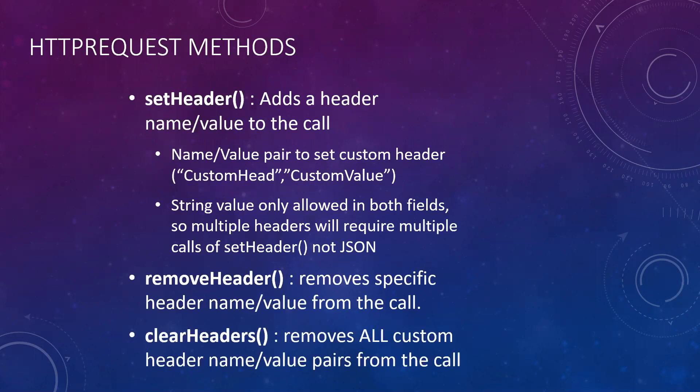Next we move on to the methods. First up is set header, which adds a custom header to your call as a name-value pair — for instance, custom head and custom value. Note this has to be string values only in both fields. Anytime you have multiple headers to put in, you need to call set header multiple times. This will not accept any JSON, arrays, or objects inside of it.